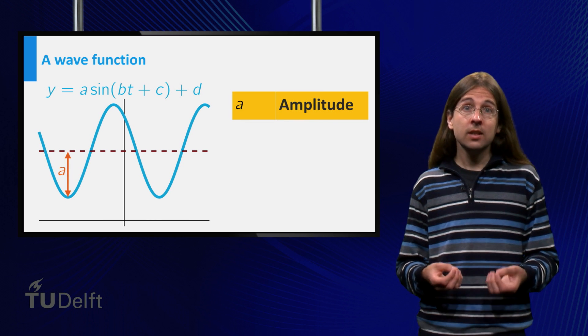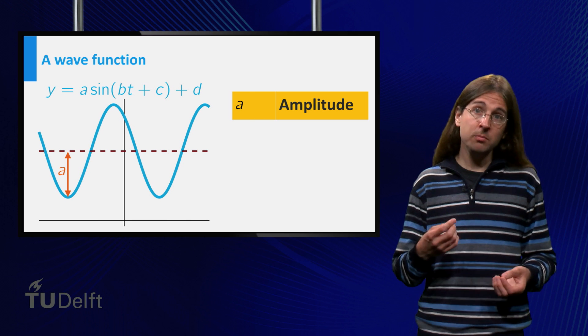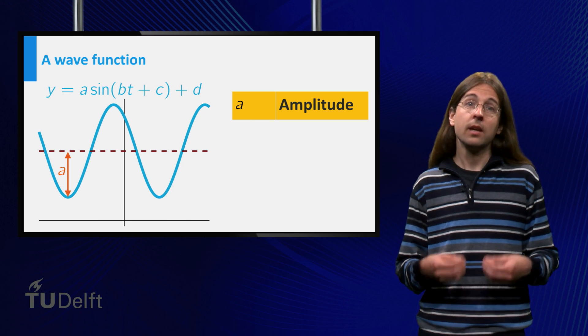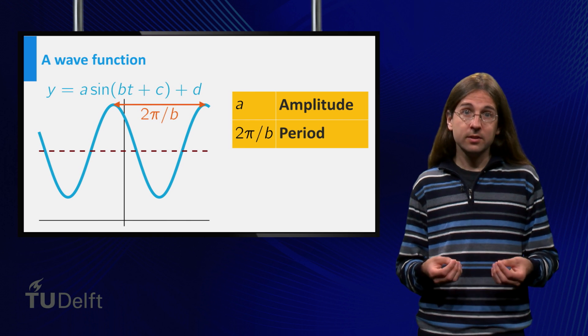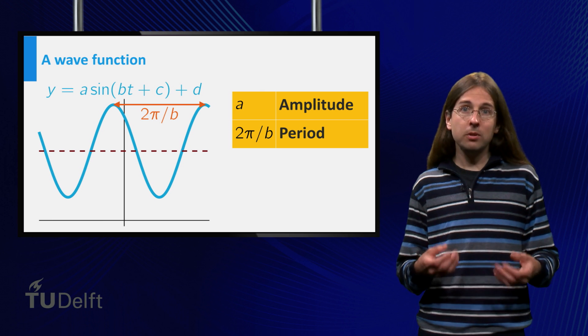a is called the amplitude and gives the difference between the minimum or maximum of the wave and the average value. 2π over b is called the period. It is the time between two waves.